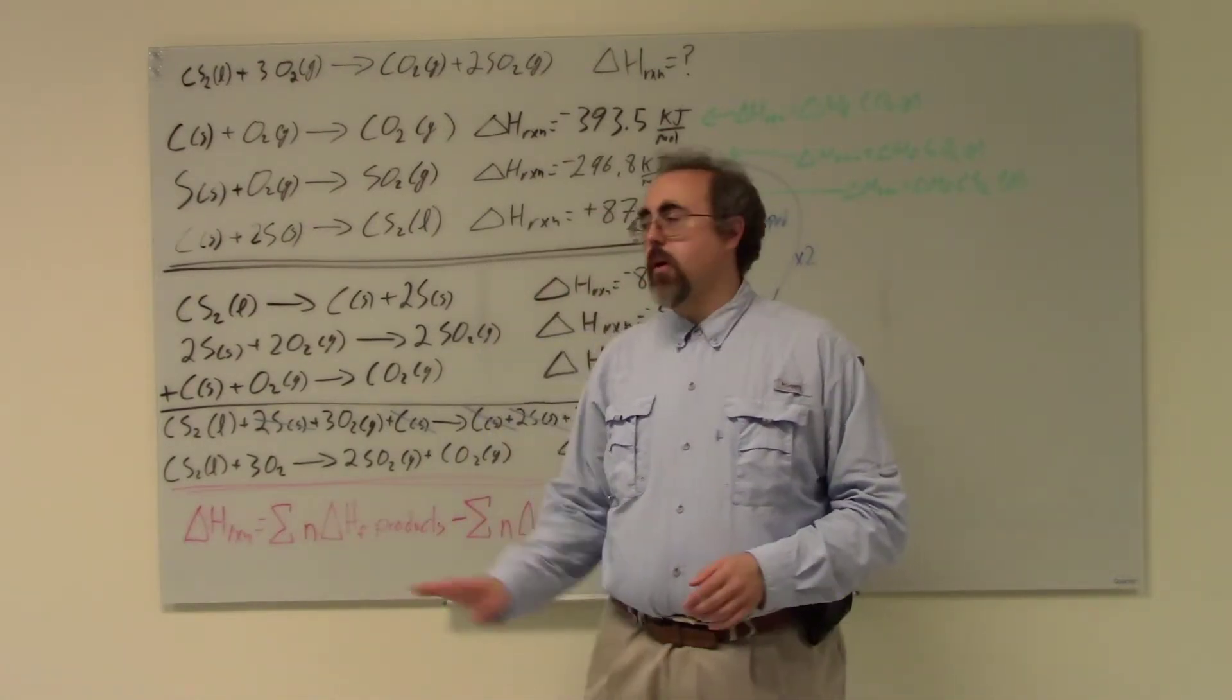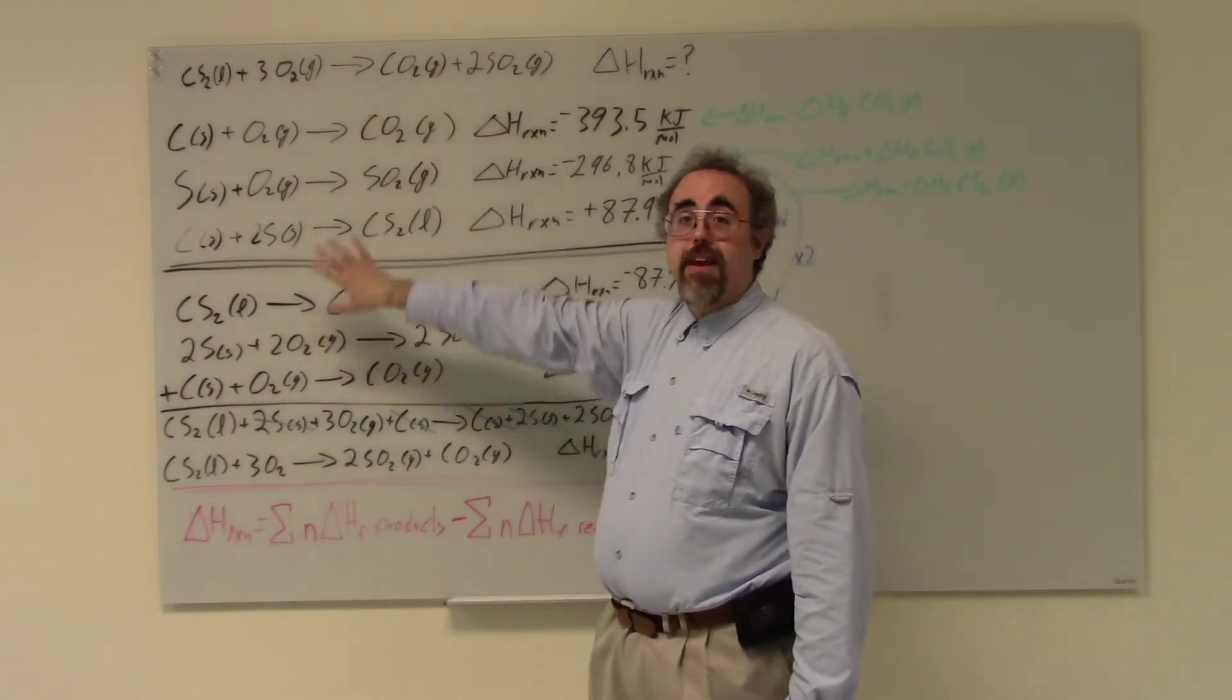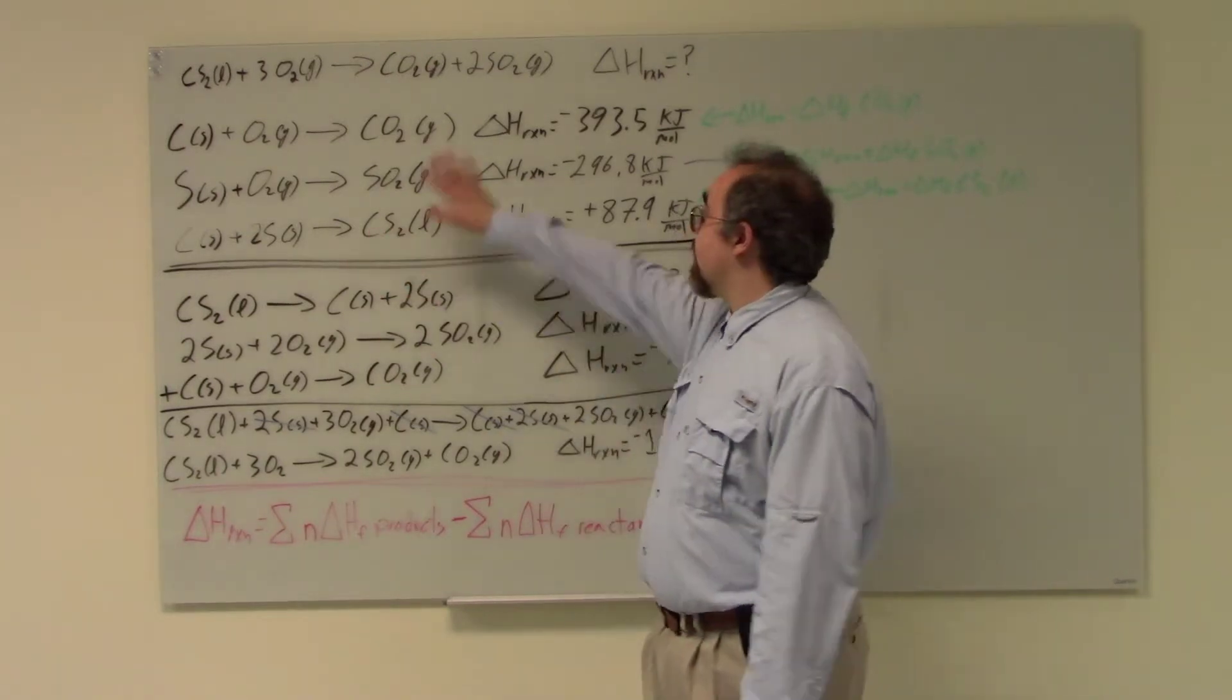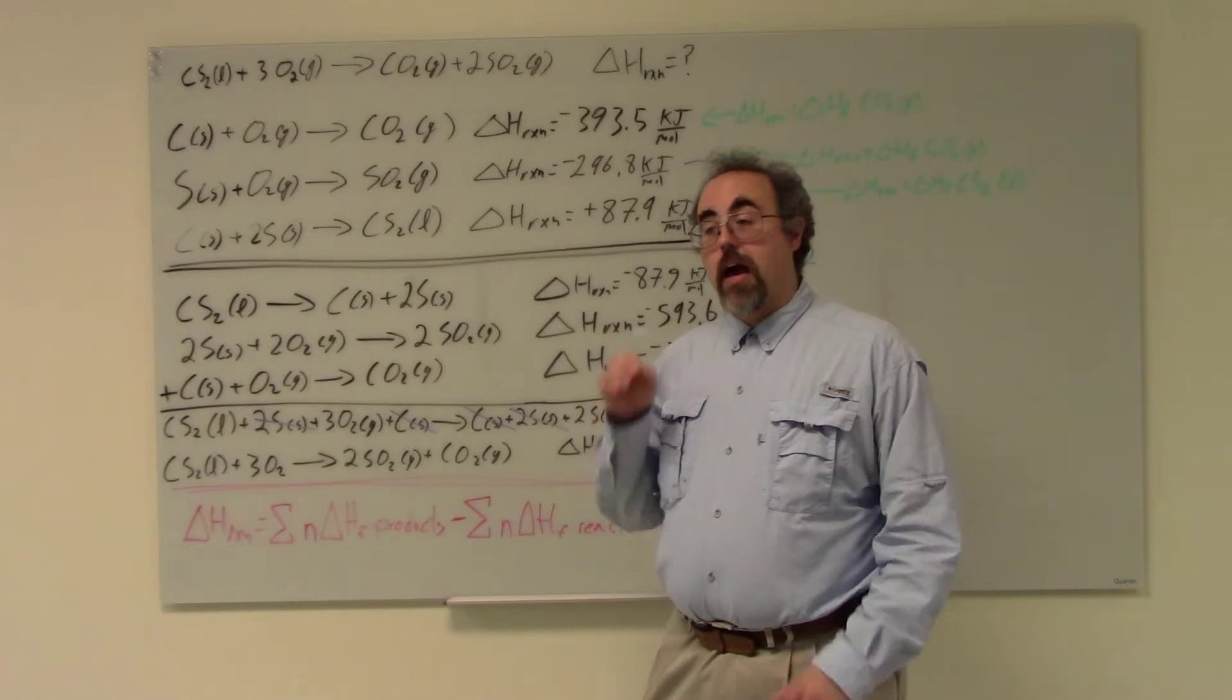Do that and you will get delta H of reaction. Pretty straightforward, and to be honest, a lot easier and cleaner than doing it this way. But this way, you don't have to have delta H reactions for those heats of formation. You can have a delta H reaction of any type of reaction you want.